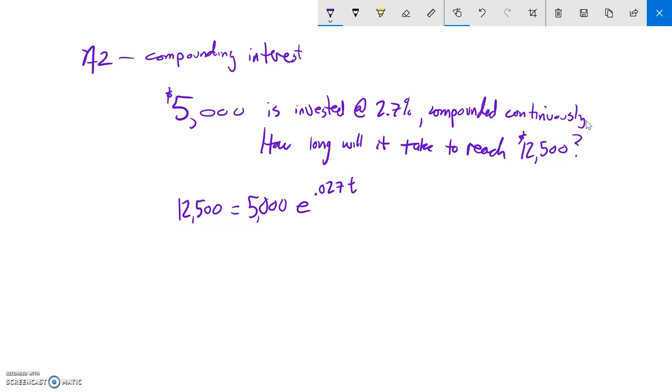I need to solve this. I'm trying to figure out what T is. So I'm going to divide both sides by $5,000 first. The situation was we're starting with $5,000 - how long to grow to $12,500? So $12,500 divided by $5,000 gives me 2.5.